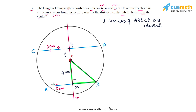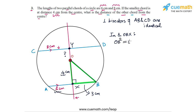In triangle OBX, we know it's a right-angled triangle. We know that OX is 4 cm. BX must be half of AB because the perpendicular bisector of AB divides it into two equal parts — AB is 6 cm, so BX is 3 cm. We know two of the sides, so we can find the hypotenuse OB. Applying the Pythagoras theorem: OB² = OX² + BX² = 4² + 3² = 16 + 9 = 25. Therefore OB = 5 cm, so the radius of the circle is 5 cm.